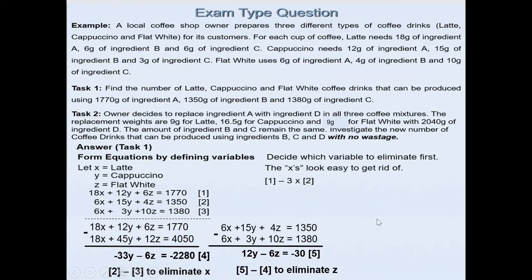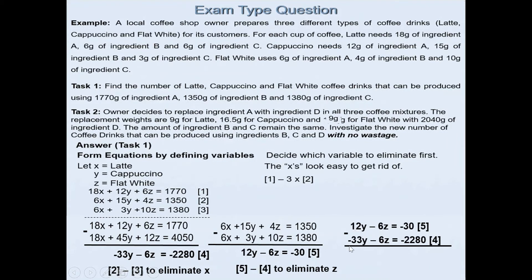Now we will eliminate z by looking at equations 5 and 4. If I got equation 5 take away equation 4, because z has the same coefficient of negative 6, if I subtract the two equations I will be able to cancel them. 12y minus minus, be careful with this, minus minus will become plus. So 12 plus 33 will give you 45y. And minus 30 minus minus is a plus as well, so we will get 2250 which is a positive result. This is 45y equals 2250. If I divide by 45 on both sides, I will get the y value which is 50.